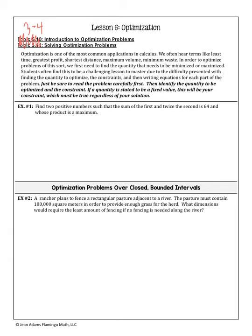For question number one, we are to find two positive numbers — positive is a restriction — such that the sum of the first and twice the second is 64, and whose product is a maximum. We are trying to maximize the product. Part a: we're going to let x equal the first number and y equal the second number. You do have to define your variables — we need to know what you're letting equal what.